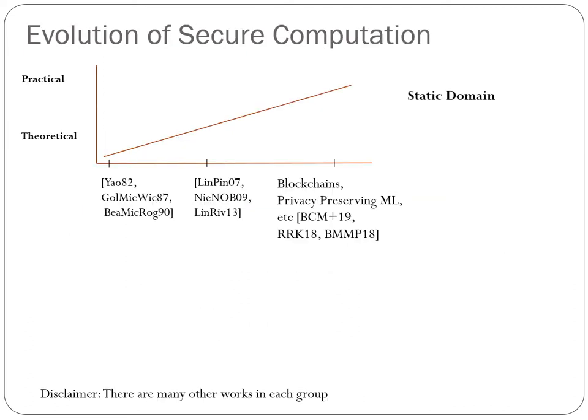The initial protocols for secure computation were secure only against static corruptions — they provided security when the parties were corrupted at the beginning of the protocol. There has been quite a lot of progress in this domain. The works of Yao, GMW, and BMR were theoretical feasibility results, but these were later improved to obtain efficient MPC by the work of Lindell et al., Nielsen et al., and Lindell-Reva.